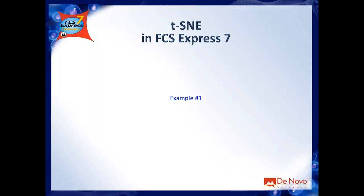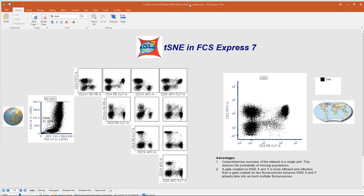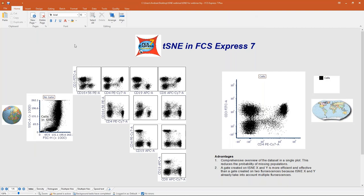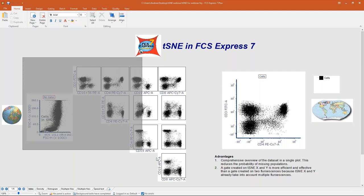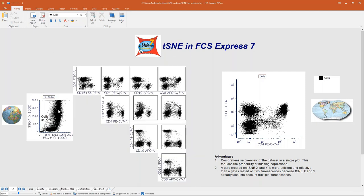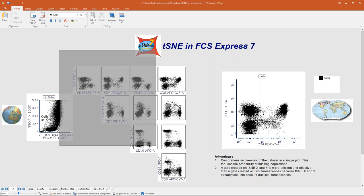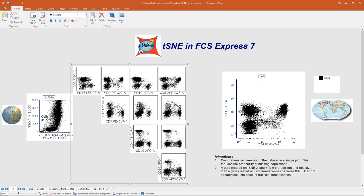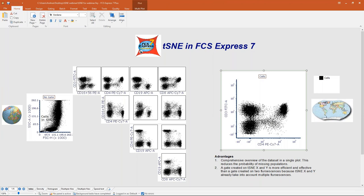This is FCS Express — most of you already know it; the user interface is basically like PowerPoint. On the left I have my actual FCS file with a plot where I've gated on lymphocytes, and those are all the 2D plot combinations of parameters representing the lymphocyte population. On the right I want to plot the tSNE map of my dataset. In FCS Express, when you want to run tSNE, go to the Tools tab of the ribbon bar and click on the Transformation button.